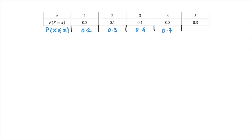We carry on this way: the probability that X be less than or equal to 4 will equal 0.4 plus 0.3, so that will be 0.7. And finally, the probability that the discrete random variable be less than or equal to 5 will be 0.7 plus 0.3, which equals 1. And that's exactly what it should be in a cumulative probability distribution table.